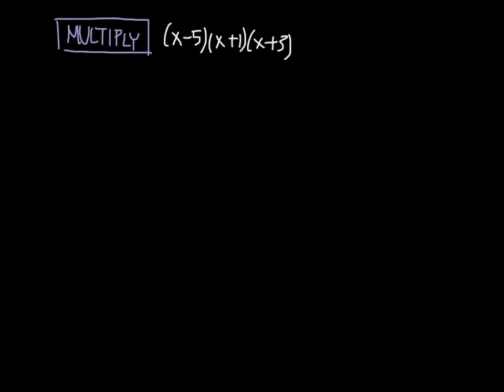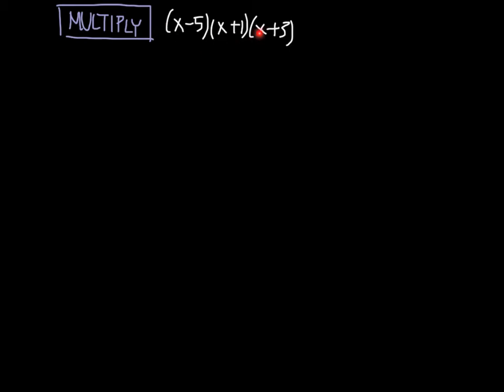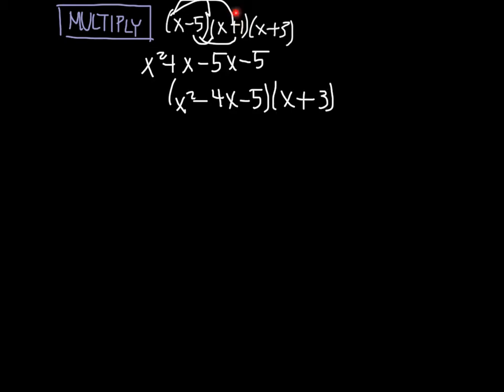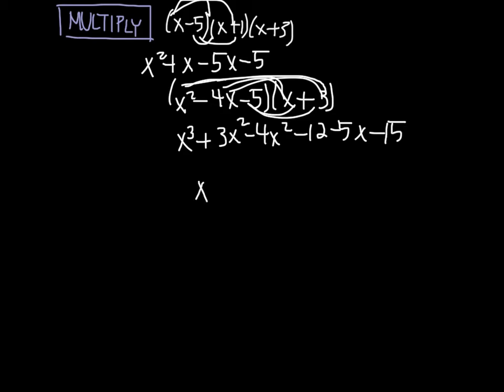Our third problem is a multiplication problem. And we're going to treat it like it's a FOIL problem with these first two values, and then we're going to multiply this third one. So x times x, x squared plus x minus 5x minus 5. Simplify that to be minus 4x, so minus 4x minus 5. Then we're going to multiply the third value. So x to the third, 3x squared, so x to the third, 3x squared minus 4x squared minus 12x minus 5x minus 15. And our final answer is x to the third minus x squared minus 17x minus 15.